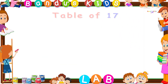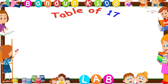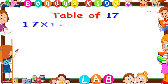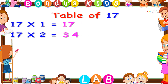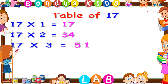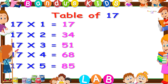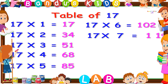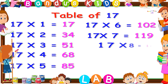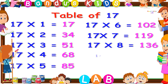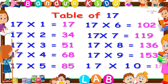Well done kids. Now let's revise the table of 17 one more time. 17 ones are 17, 17 twos are 34, 17 threes are 51, 17 fours are 68, 17 fives are 85, 17 sixes are 102, 17 sevens are 119, 17 eights are 136, 17 nines are 153, 17 tens are 170.